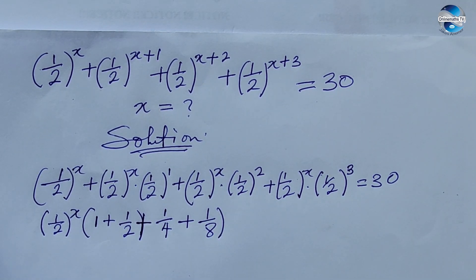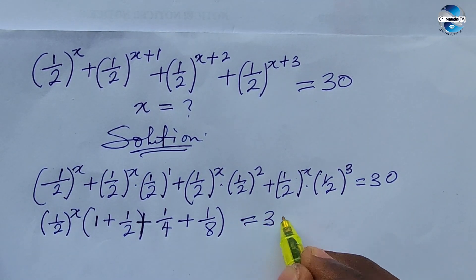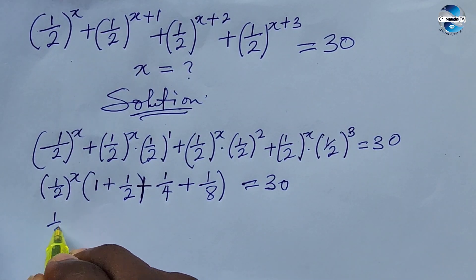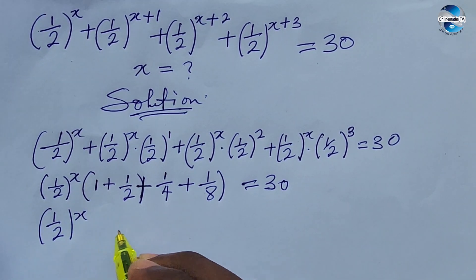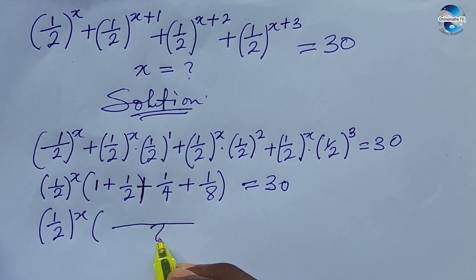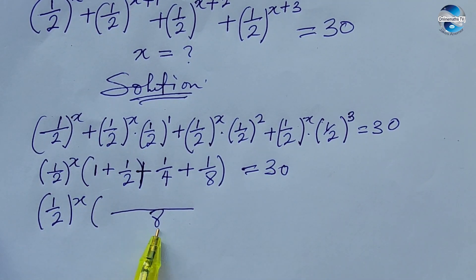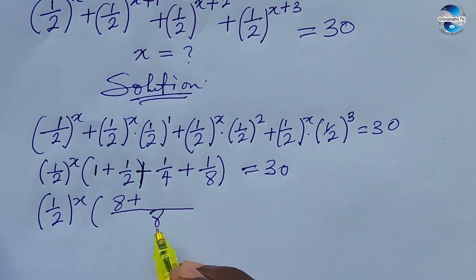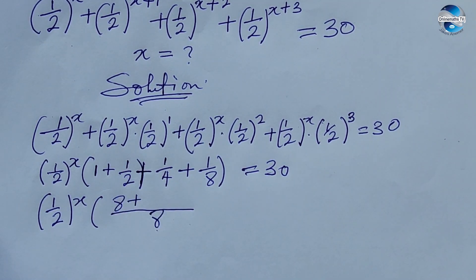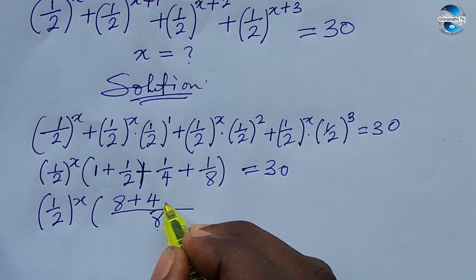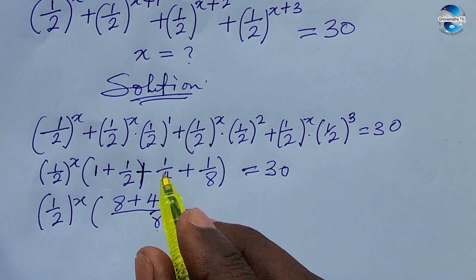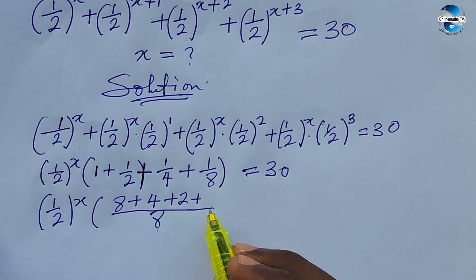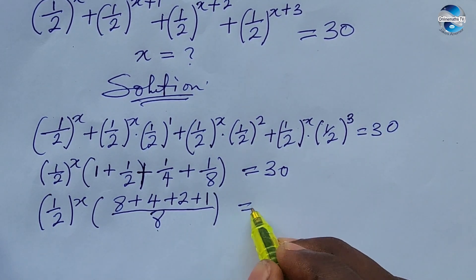Everything equals 30. We can now find the LCM of everything inside this bracket. The LCM is 8, so: 8/8 = 1, plus 4/8 times 1 = 4, plus 2/8 times 1 = 2, plus 1/8 times 1 = 1. This gives us (1/2)^x times (8 + 4 + 2 + 1) all over 8, equal to 30.